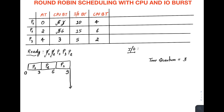From 6 to 9 P1 runs and its first CPU burst is complete. It will now go for I/O from 9 to 19 (9 + 10 = 19). P1 is removed from the ready queue and placed into the I/O list, where it stays in the waiting state until time 19.